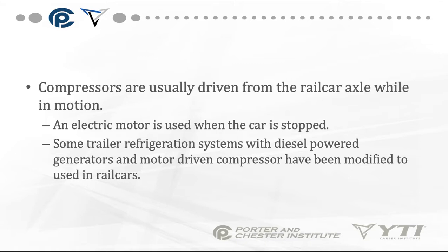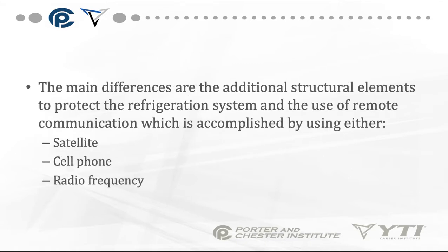Some trailer refrigeration systems with diesel-powered generators and motor-driven compressors have been modified to be used in rail cars. The main differences are the additional structural elements to protect the refrigeration systems and the use of remote communication, accomplished by either satellite, cell phone, or radio frequency. Trains are long, so you have to be able to monitor and control the temperatures at different components remotely.